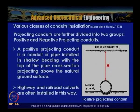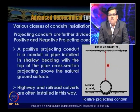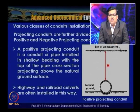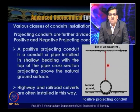Projecting conduits are of two types: positive projecting and negative projecting. A positive projecting conduit is a pipe installed in shallow bedding with the top of the pipe cross-section above the natural ground surface. Highway and railroad culverts are typically installed this way.